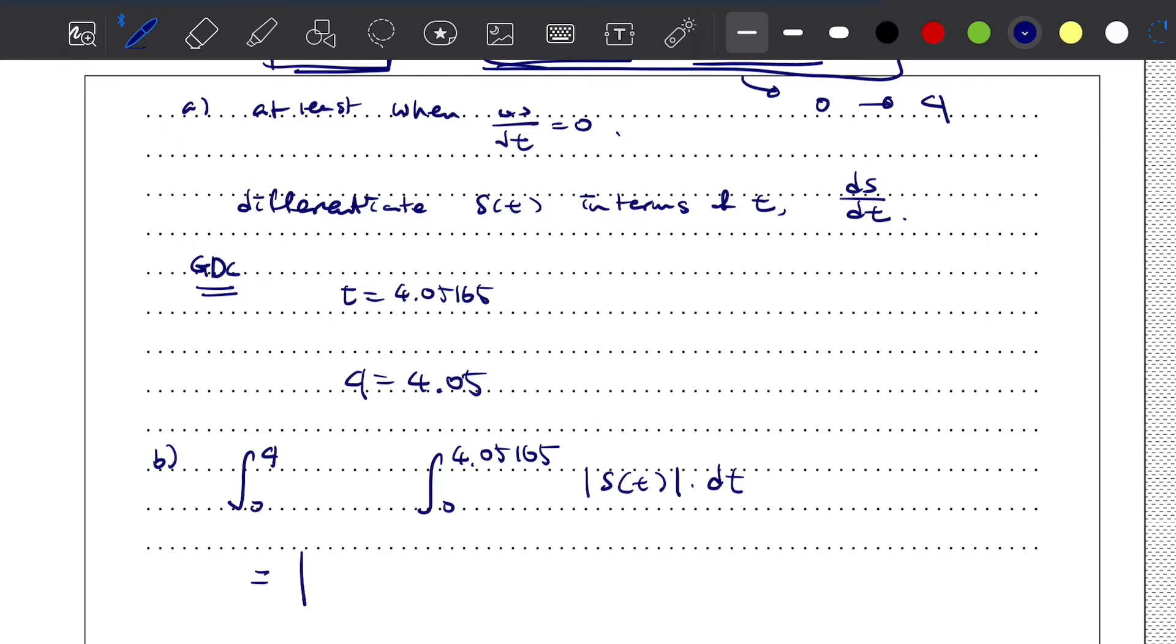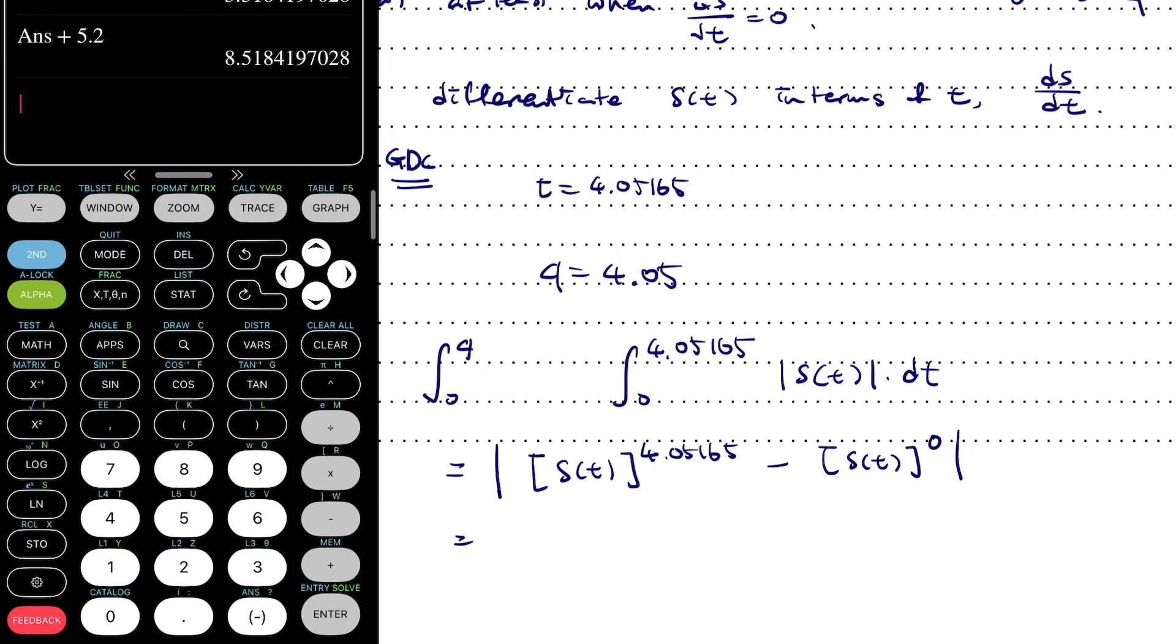We can rewrite this as the absolute value of s(t) where t equals 4.05165 minus s(t) where t equals 0. When we substitute 4.05165 into our function s(t), we get -5.2. When we substitute 0 into the function s(t), we get positive 3.3184197. Then we get a final answer of 8.5184, so the distance is approximately 8.52.